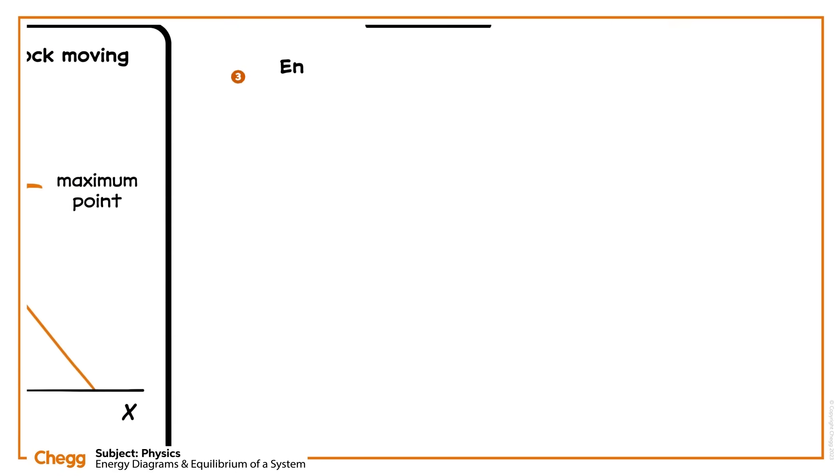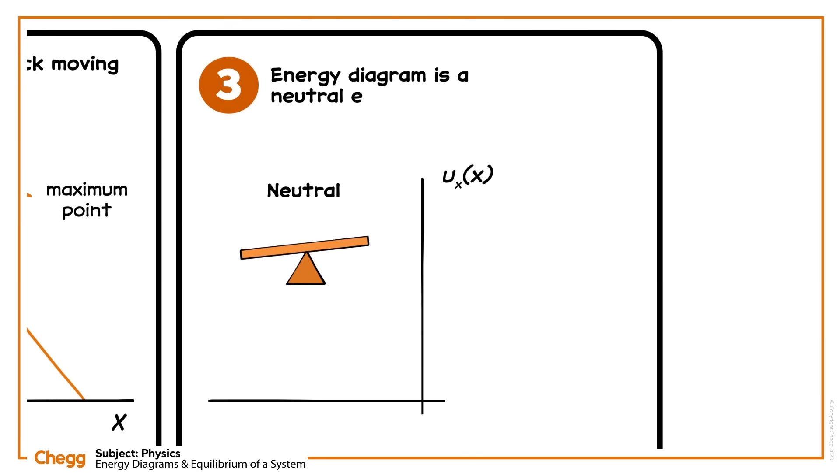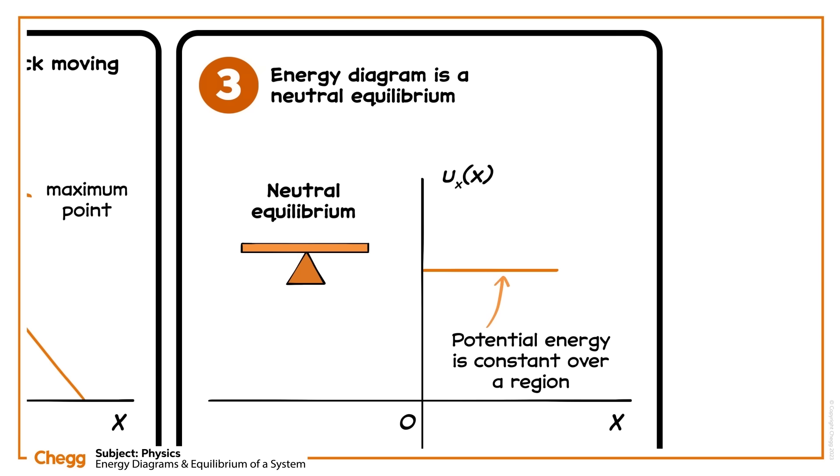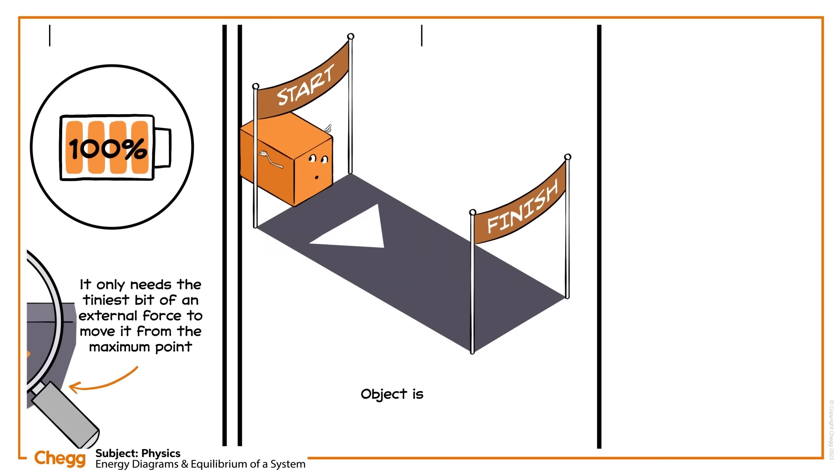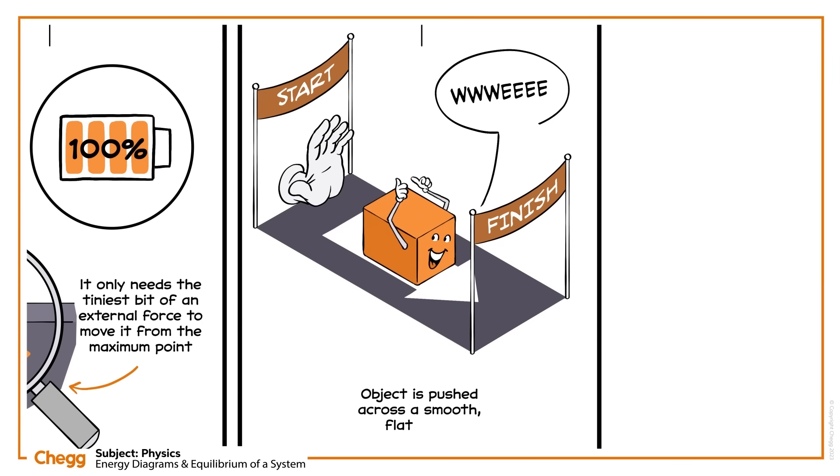The last common type of energy diagram is a neutral equilibrium. This is evident when the potential energy is constant over a region. This diagram, for example, could be illustrating a block being pushed along a smooth, flat table. It's unlikely to move back to its starting position on its own, right?